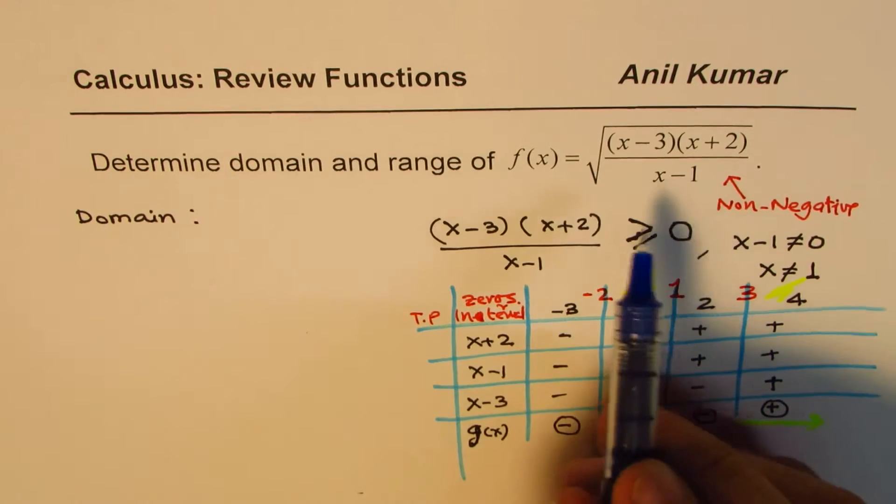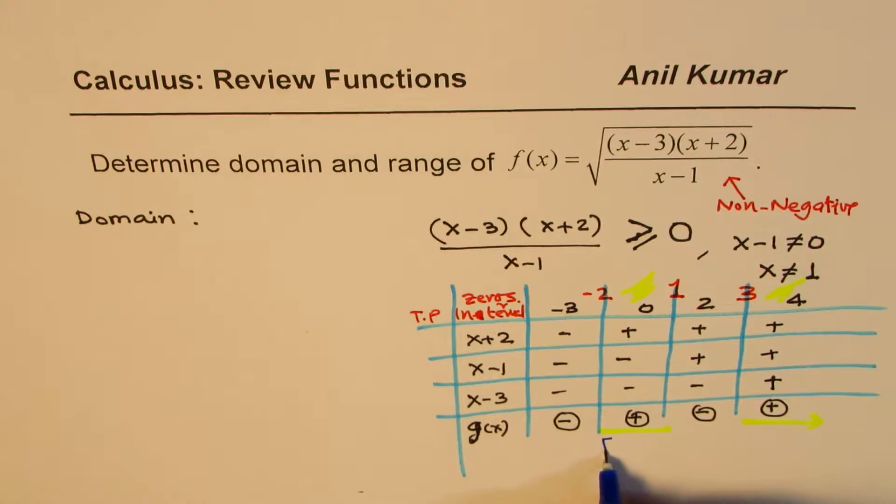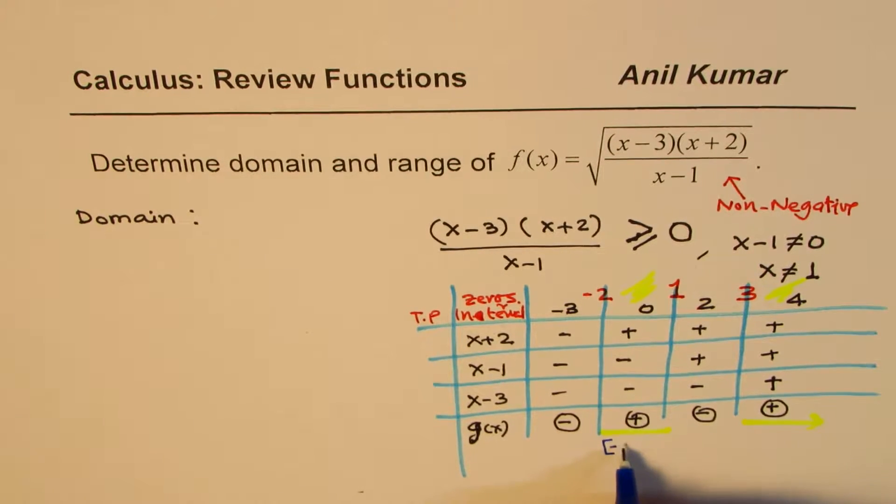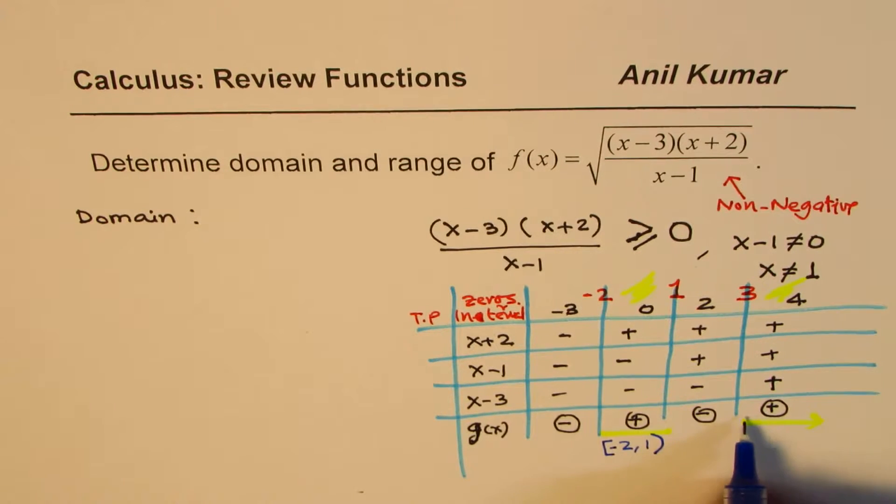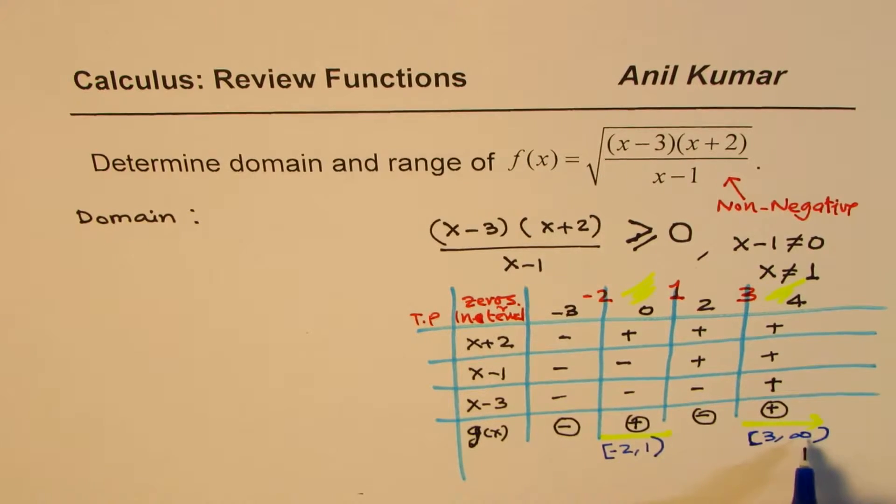Now, in these intervals, you also notice that we cannot have 1, since 1 makes the denominator 0. So, we could write this interval as from minus 2 to 1. 1 is not included. And for that interval, it is from 3 is included to infinity. You cannot include infinity. So, now we finally get our domain.